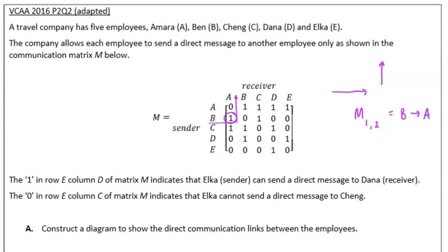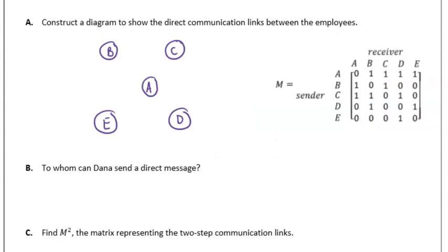The first thing that we're asked to do here is to construct a diagram to show the direct communication links between the employees. With our diagrams we want to have a vertex for each of those people, so we're going to need five of those labeled as they're labeled in the matrix. Then we're going to use arrows to show that direct communication, and we're only going to show an arrow if there is a one as we read in and up for each person. It is a little bit messy as we go, but what we want to do is just start working our way across a row.